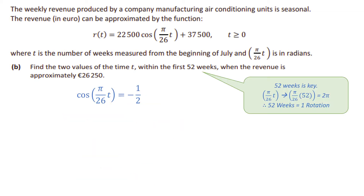We take away 37,500 from both sides, then divide both sides by the coefficient in front of the cosine, leaving us with cos(π/6·t) = −½. Now the idea of 52 weeks is really important. The angle is π/26·t — there's a coefficient in front of t and that changes the period of the function. Subbing in 52 gives 2π, which means one full rotation.